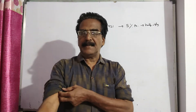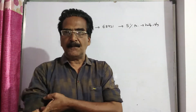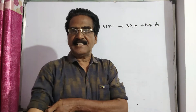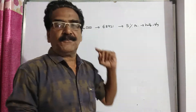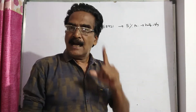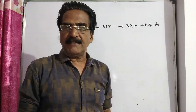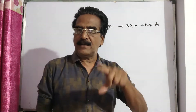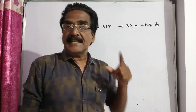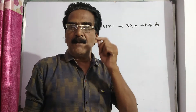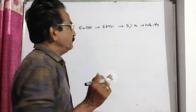Hi friends, good morning. Please look at the next problem in compound interest. In what time will an amount of 64,000 amount to 68,921 at 5% per annum compound interest, interest being compounded half yearly?